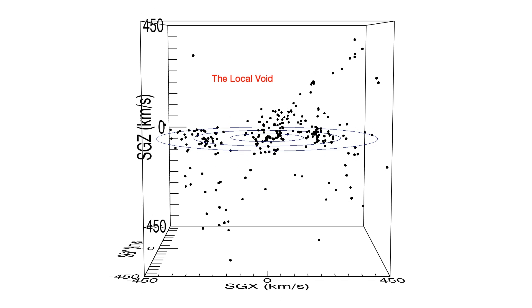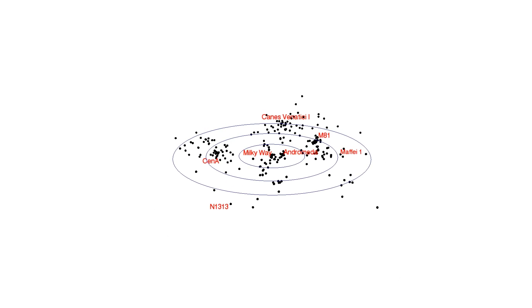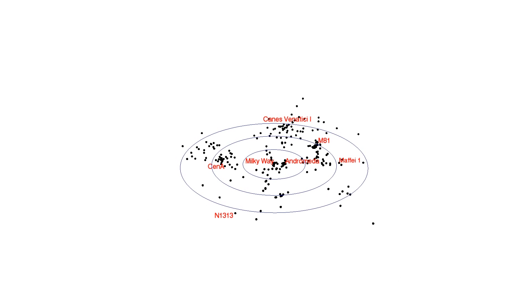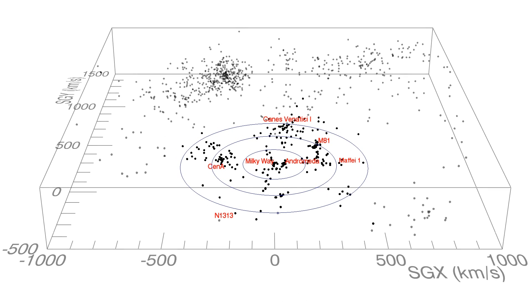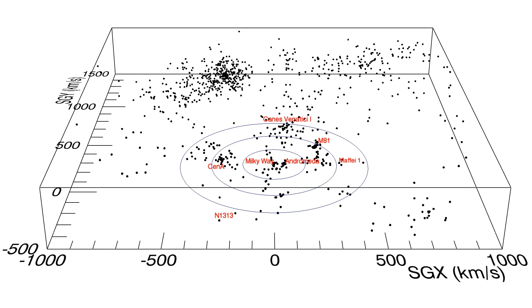We call the flattened distribution of nearby galaxies the local sheet and we see that it is a wall bounding the local void.